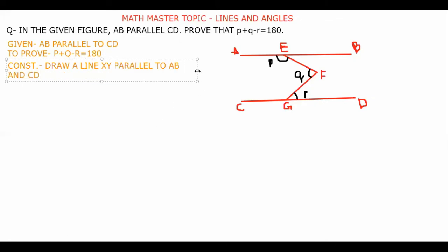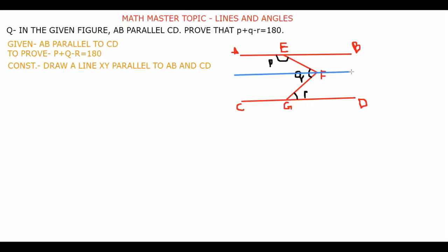I will now draw this construction in the figure as well. This is my construction. I will name the points: this is X and this is Y. So now all three lines — AB, XY, and CD — are parallel to each other, and I can start solving the question.